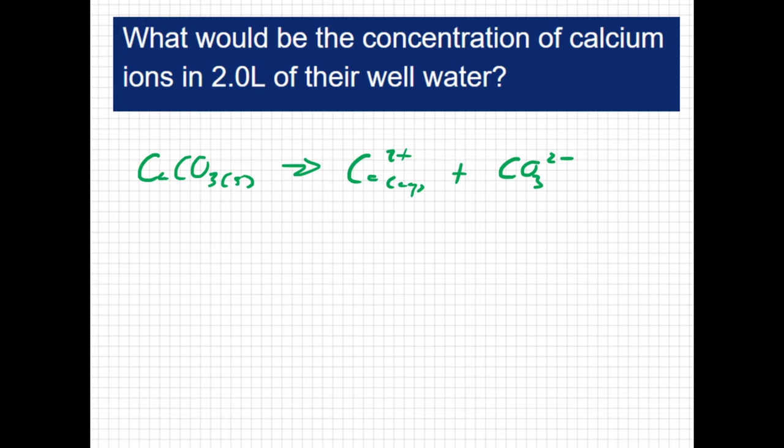So Ksp is going to equal the concentration of the calcium ion times the concentration of the carbonate ion and we just looked up the Ksp value to be 8.7 times 10 to the negative 9.